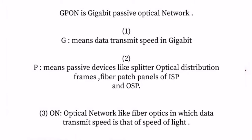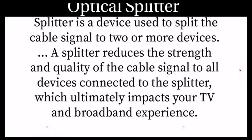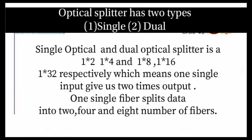Next is the optical splitter, which is used to split a cable into two or more devices. It reduces the strength and quality of the signal and ultimately impacts TV services. Types include single optical and dual optical splitters, in multiples of 1x2, 1x4, 1x16, and 1x32 respectively.